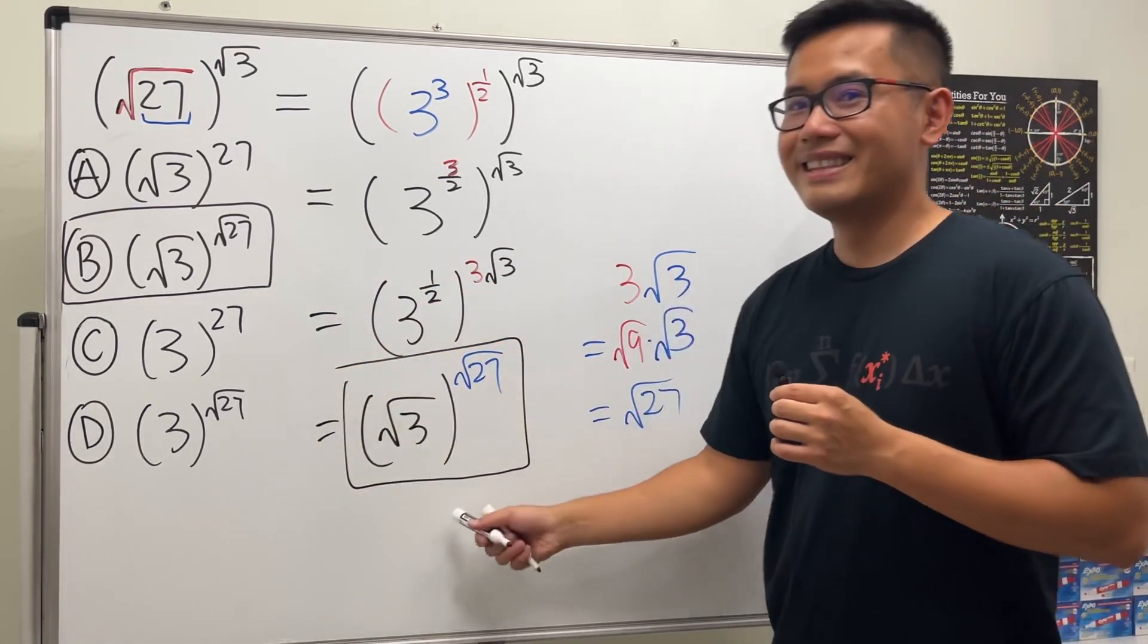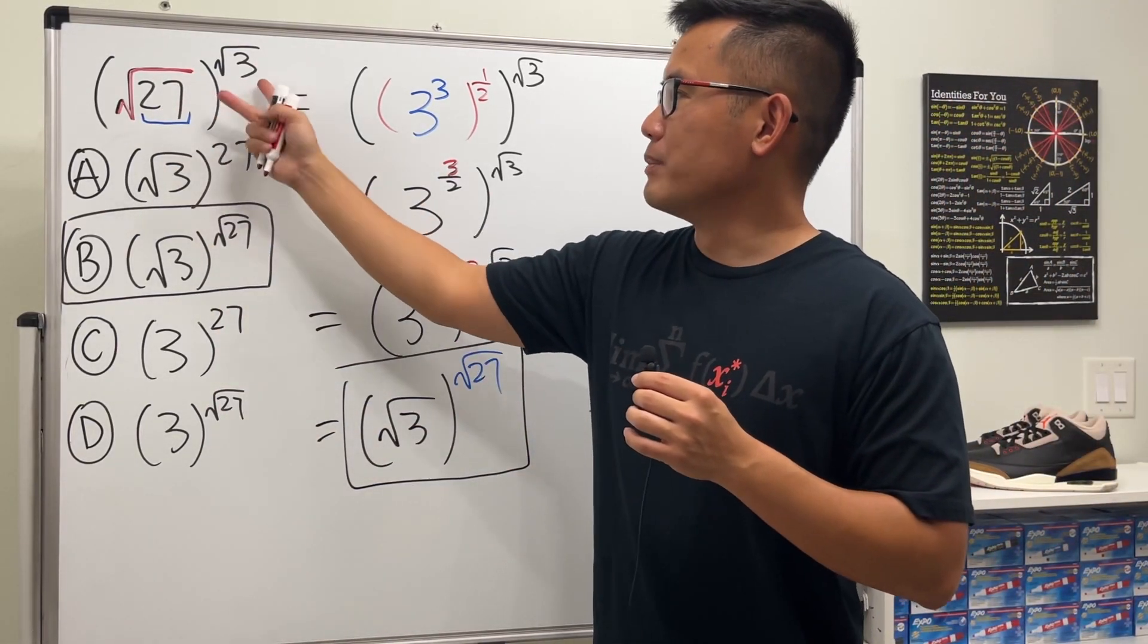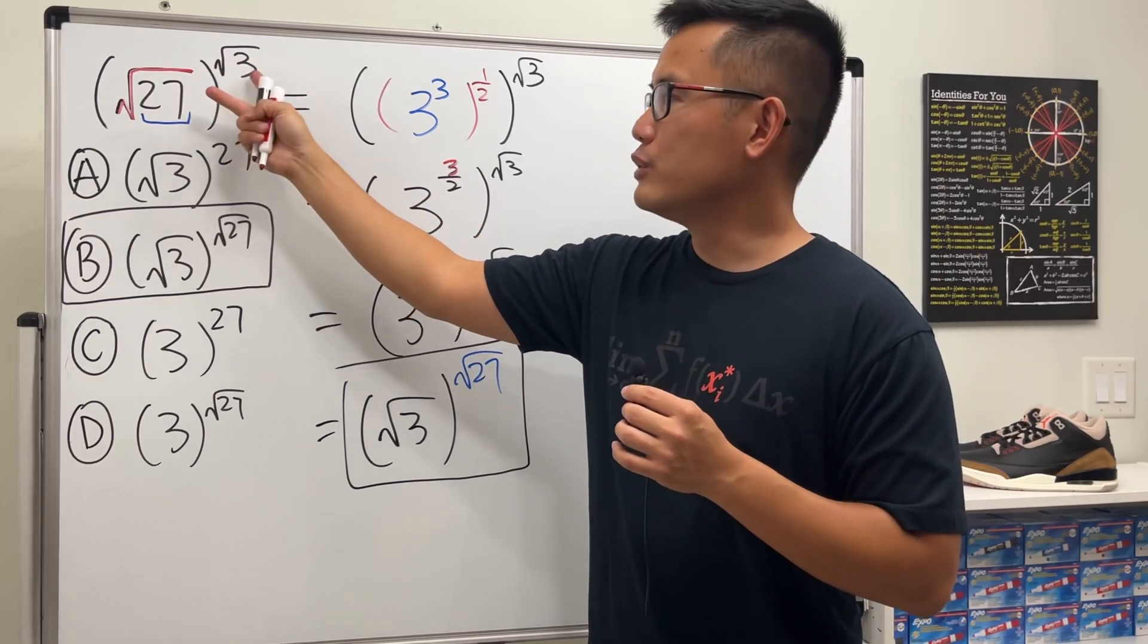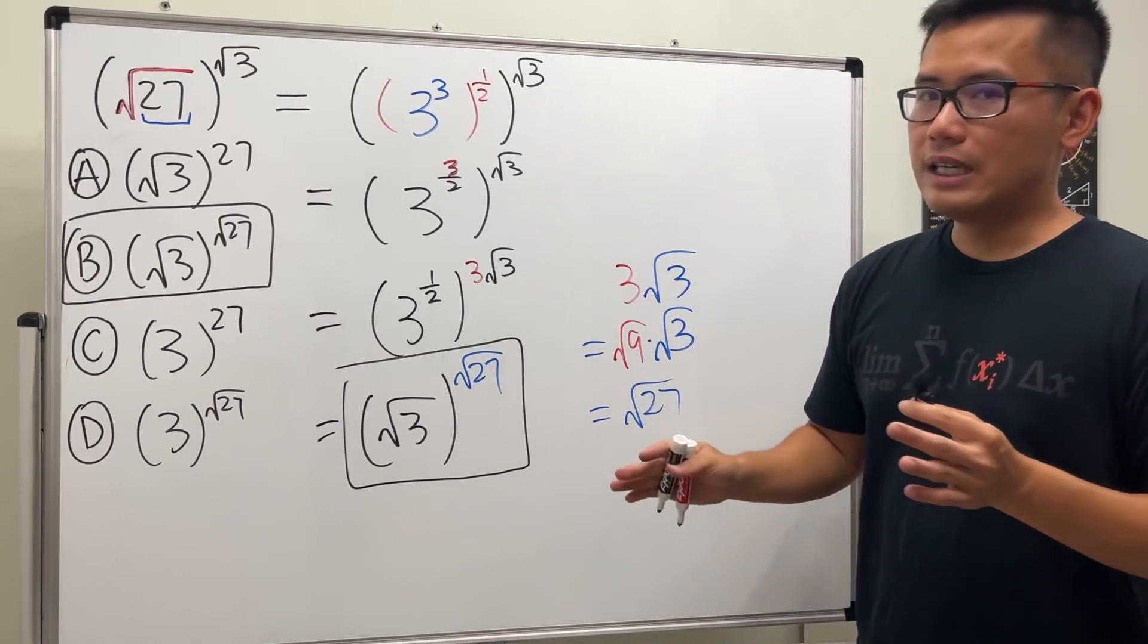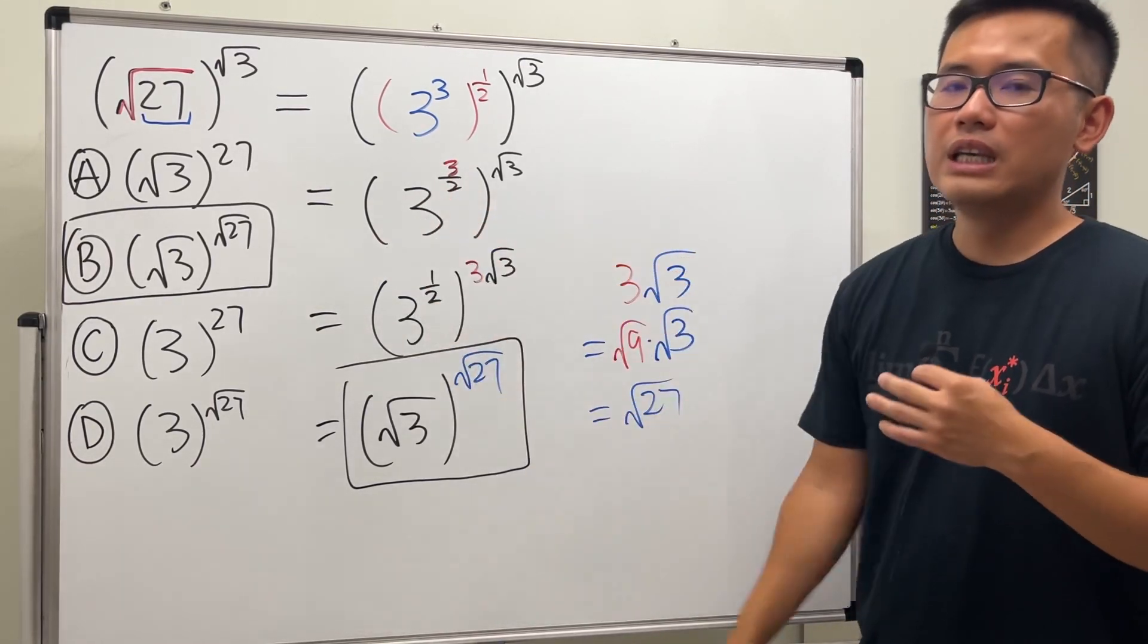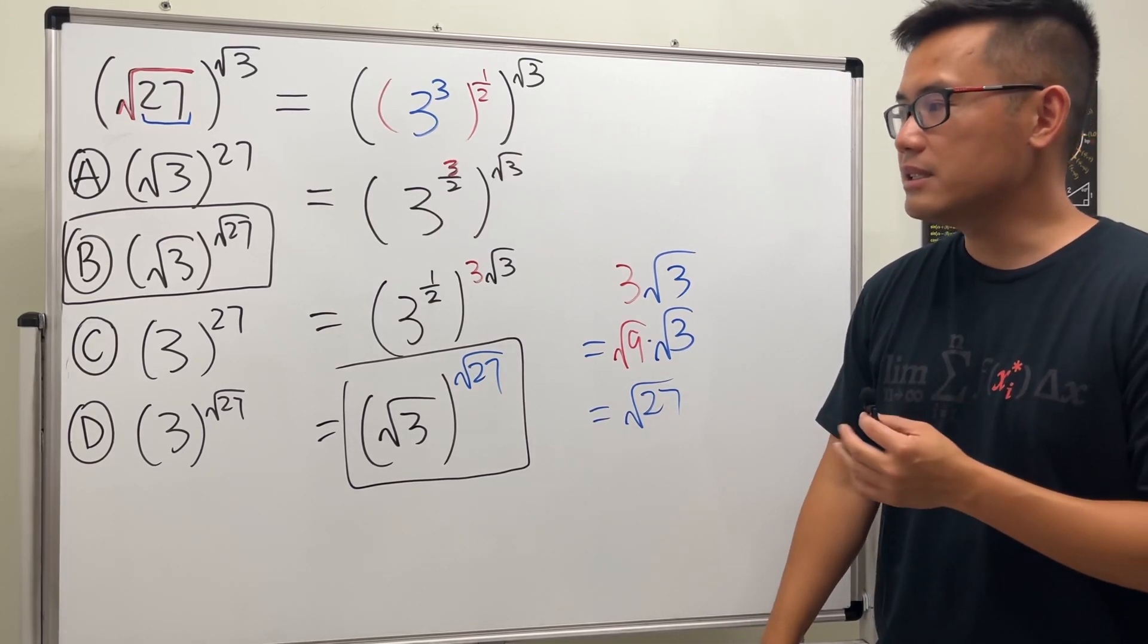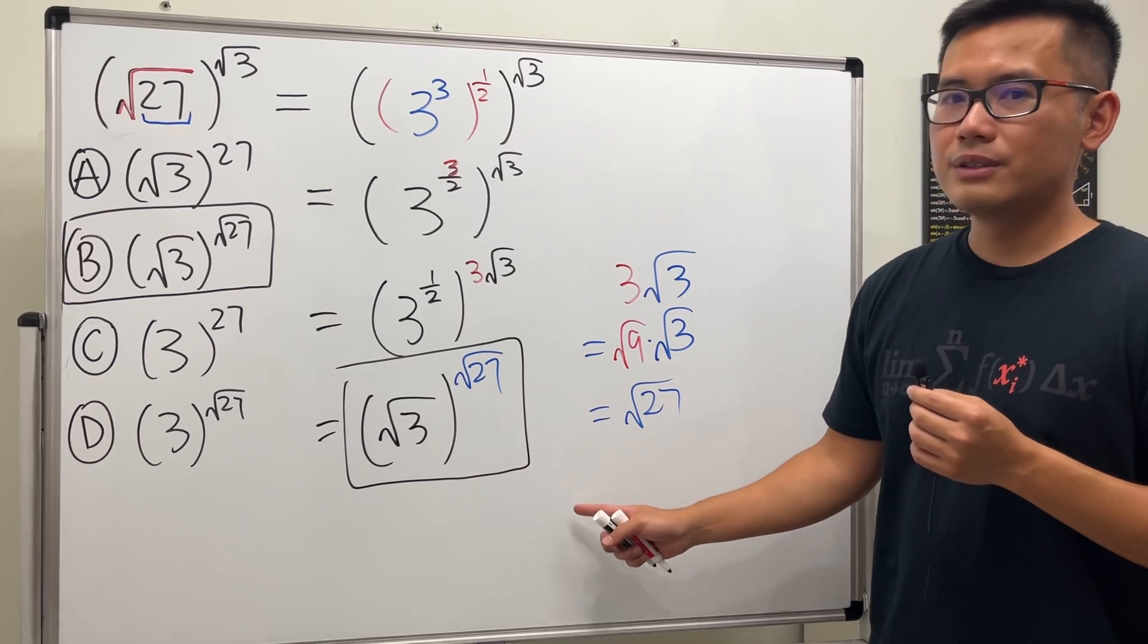Cool huh? So again, this is super cool because the base and the exponent commute, meaning that you can just switch them and then they will still give you the same value. It does not work all the time, just for this particular case. It also works if you want to see how to find out more pairs like this. Check out my other video for it, and if you want to see more algebra videos, then check out.